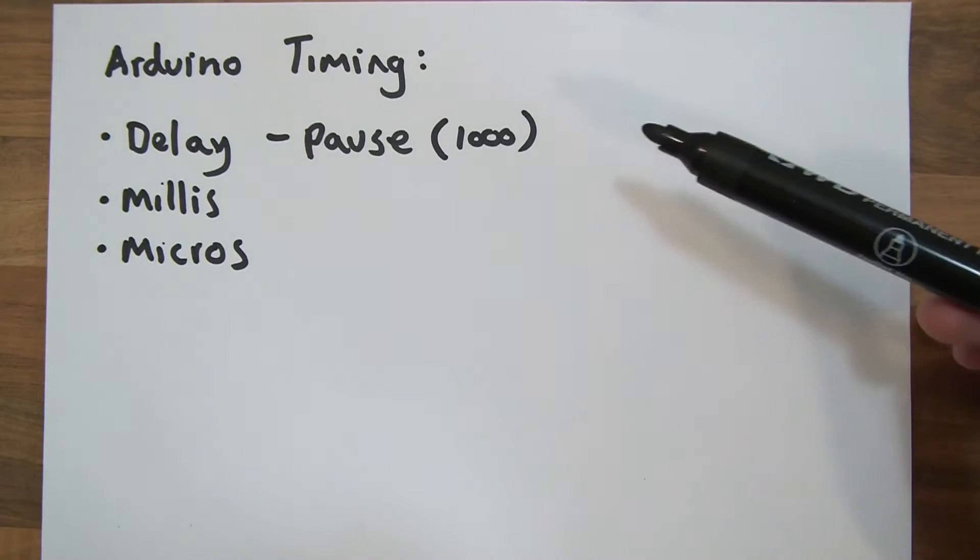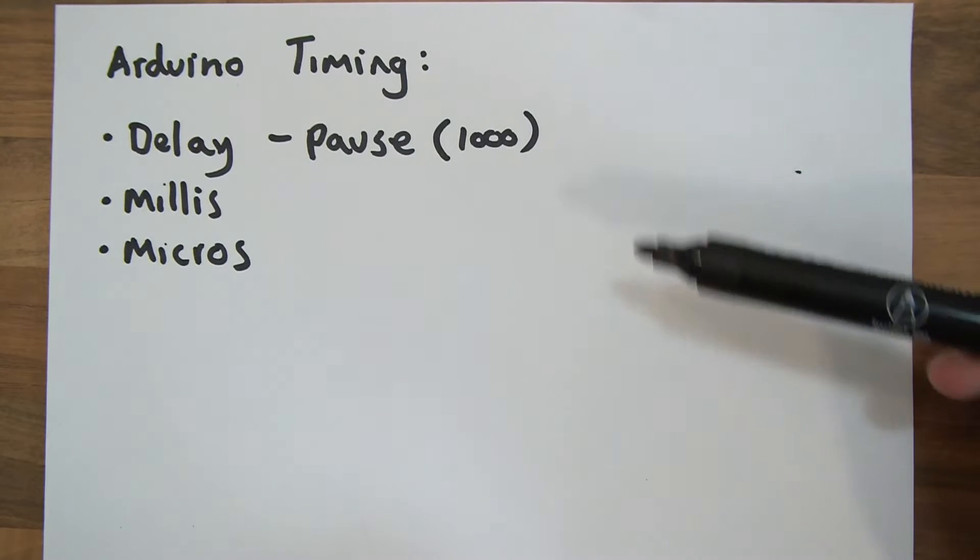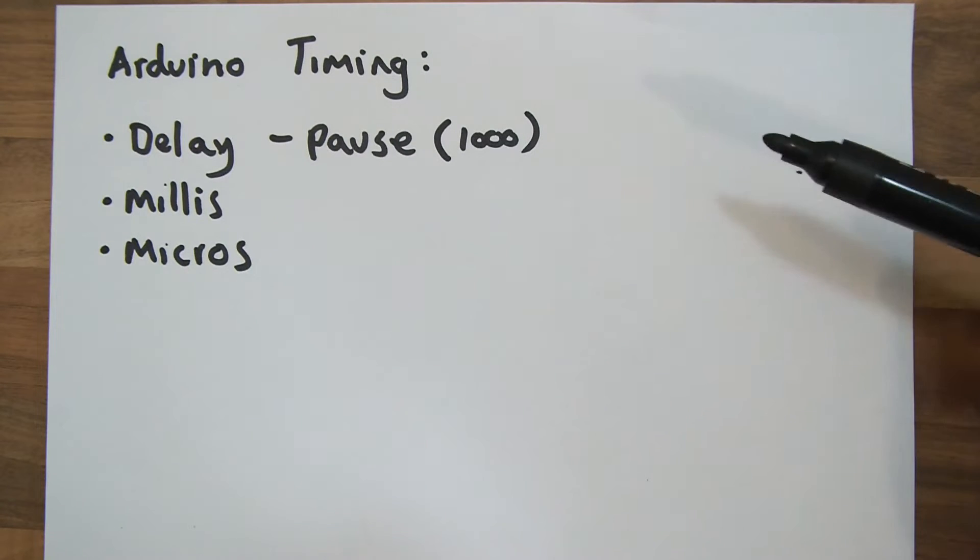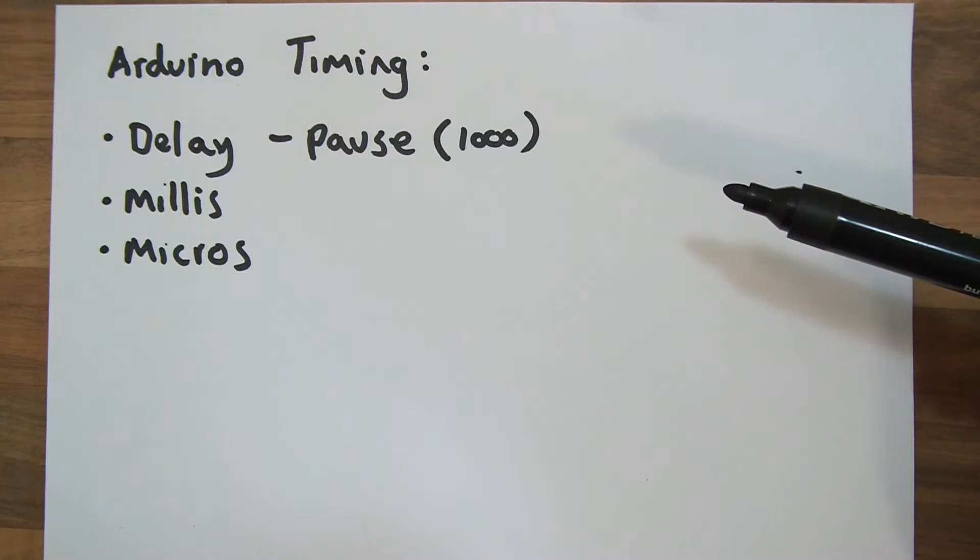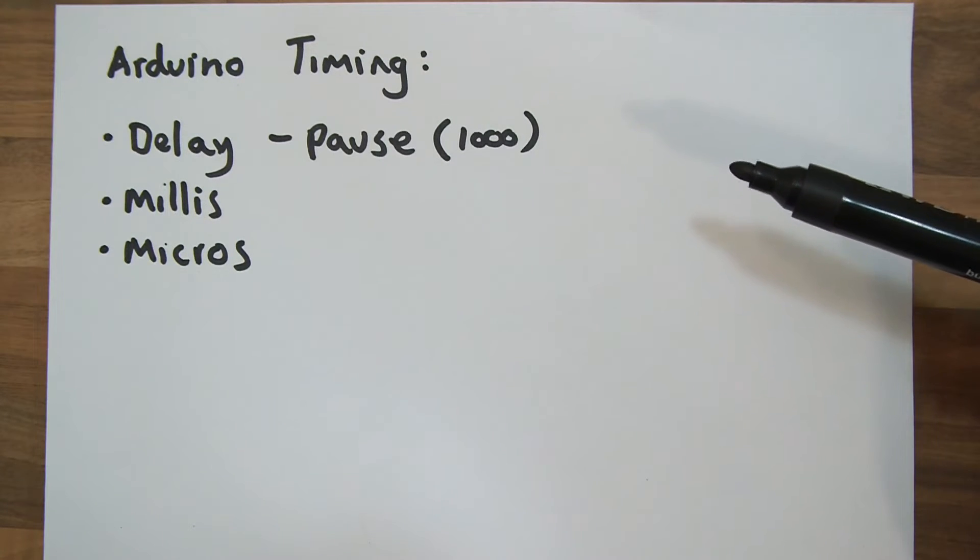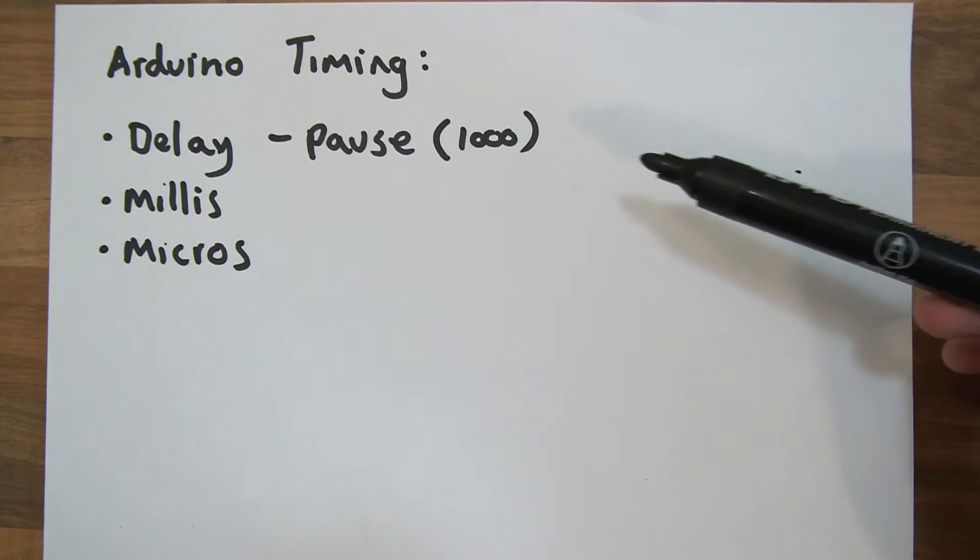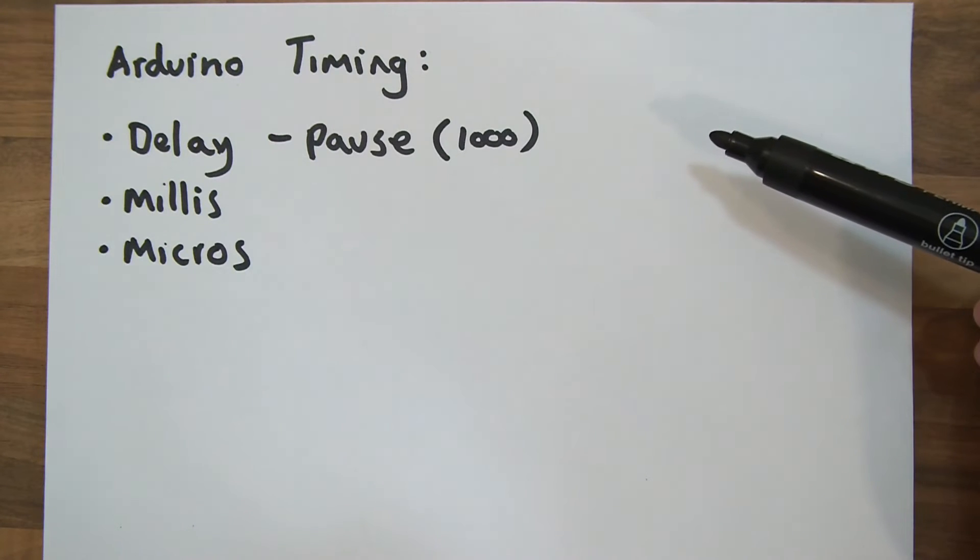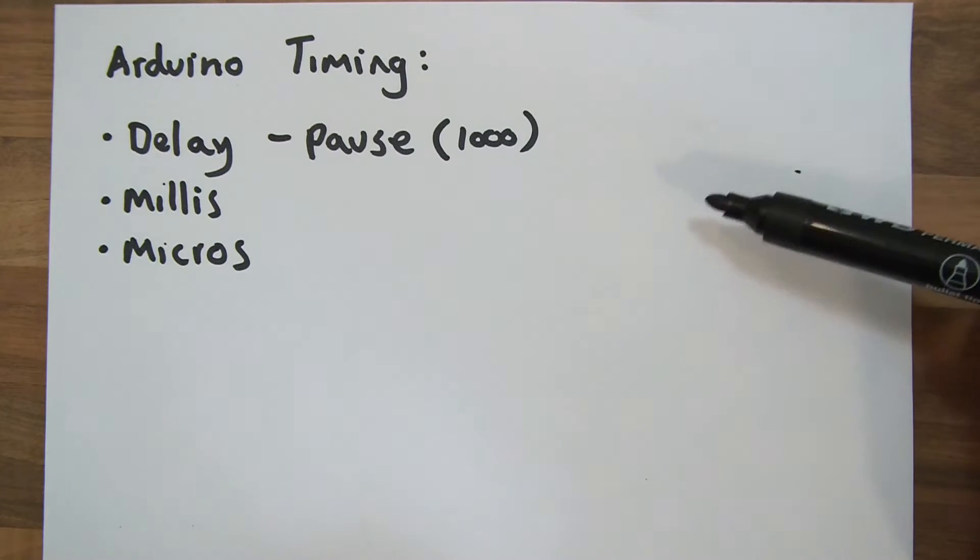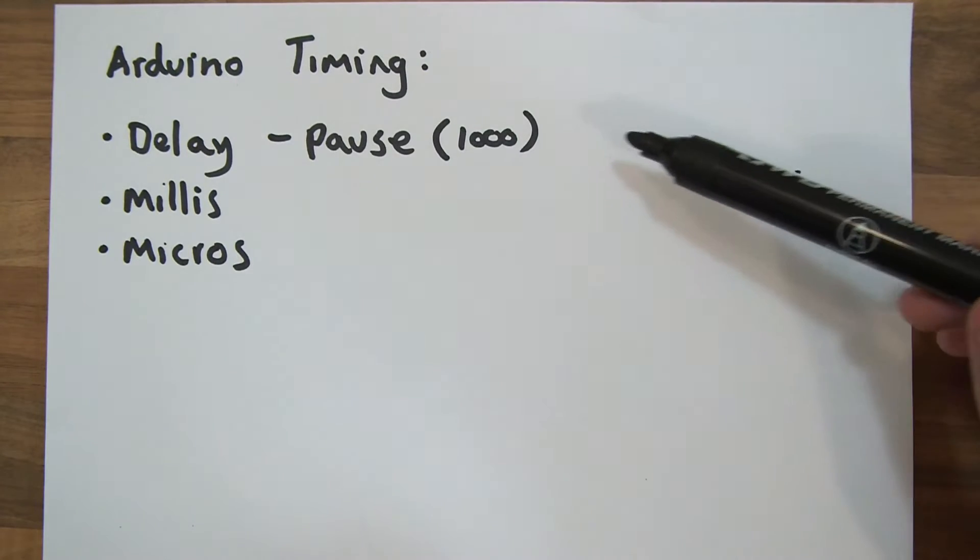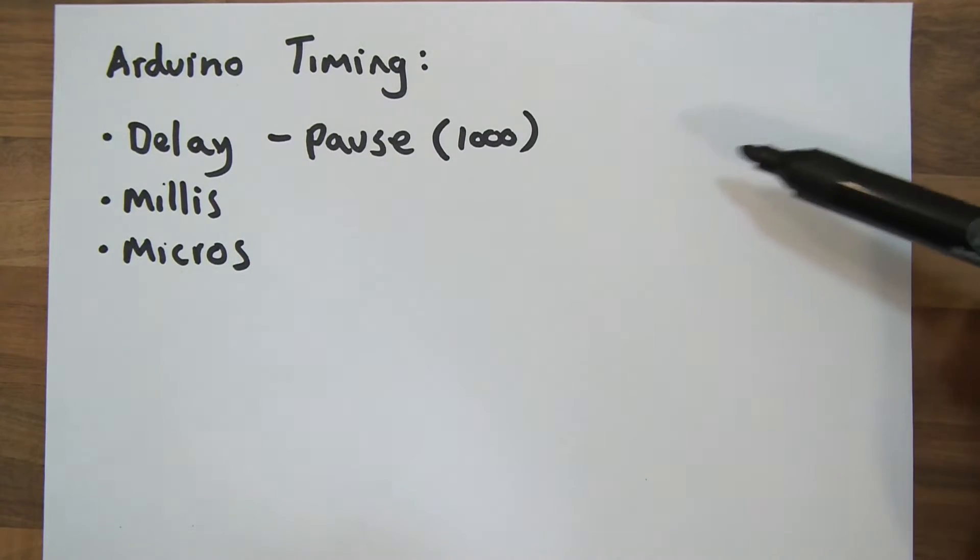So delay isn't the best to use in all situations for managing time with the Arduino, but it does have its uses. So if you've got one process, and maybe it's something like switching an LED on, you could switch the LED on, you could put a delay of 1000 milliseconds, then you could switch the LED low, and then another delay, and then repeat. That's fine. A delay is fine there, because when it gets to delay and it blocks, that's fine, because it's not actually blocking anything from happening anyway, because all it's doing is switching an LED on or off.